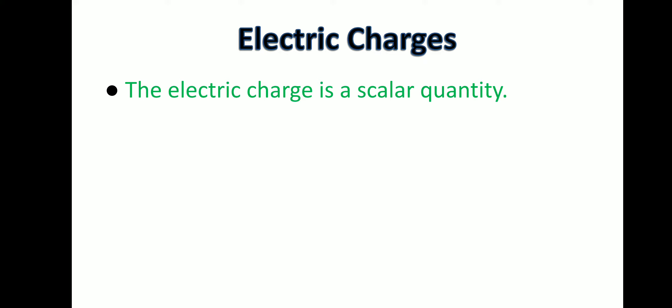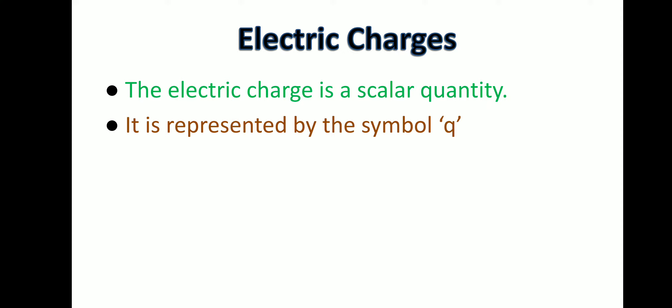The electric charge is a scalar quantity. We already know about scalar and vector quantities, so here the electric charge is a scalar quantity. It is represented by the symbol Q. A physical quantity always has a symbol, and the symbol of electric charge is Q. The unit of electric charge is coulomb.